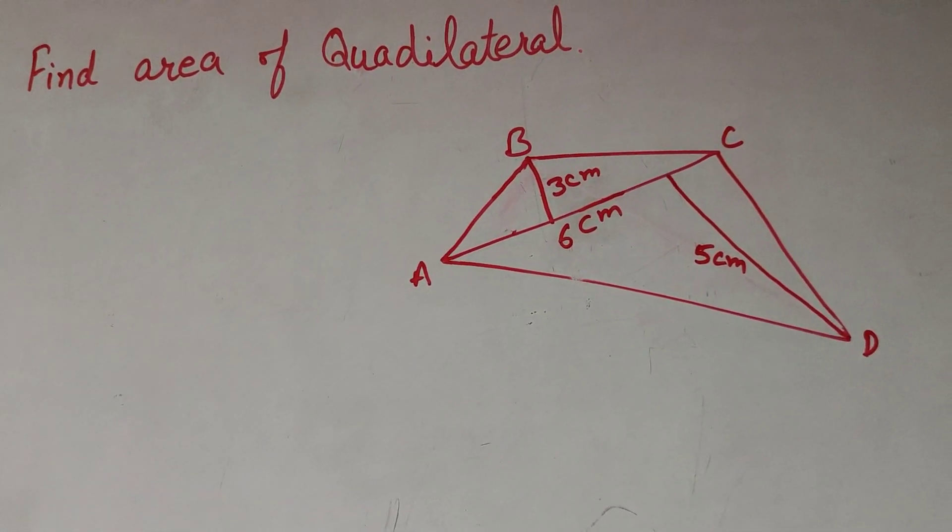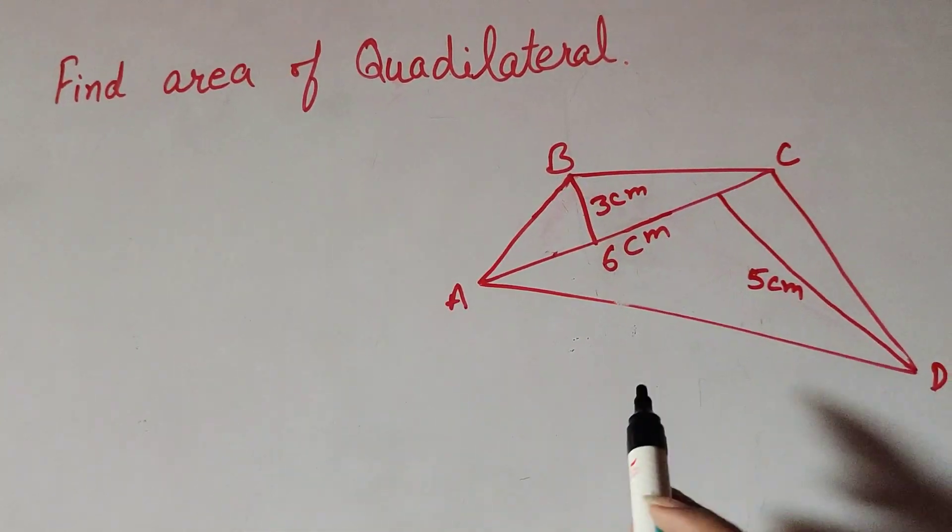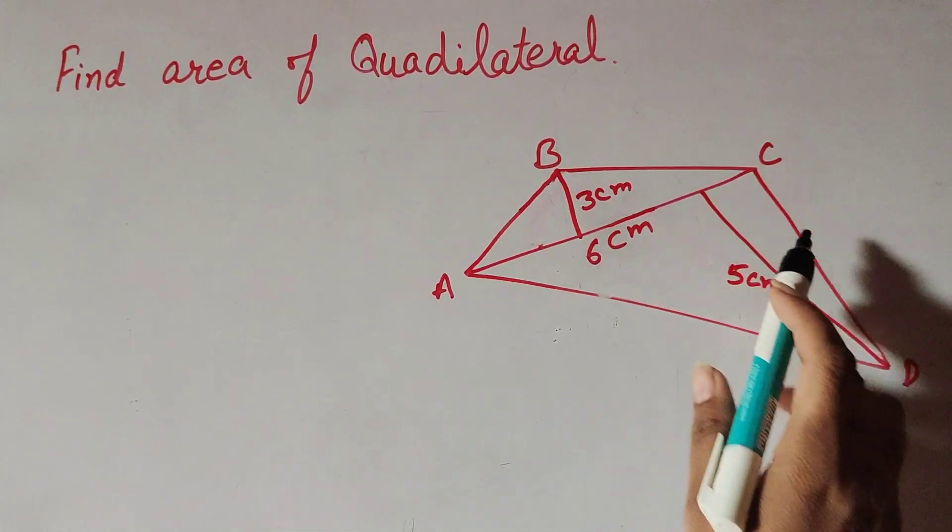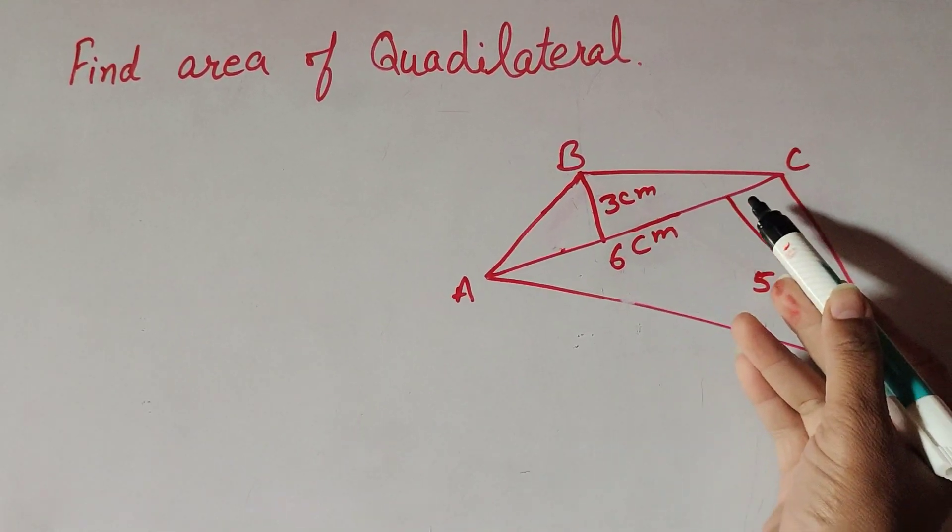Hello friends, welcome to my channel. In this video we will find the area of a quadrilateral. A quadrilateral ABCD is given and we have to find its area. The diagonal length is given.